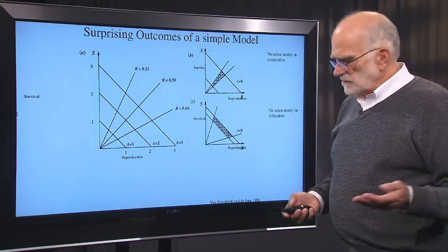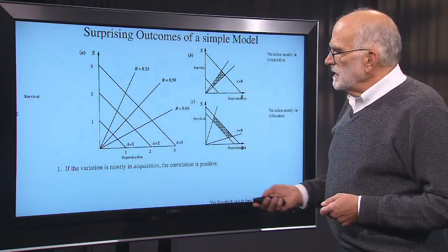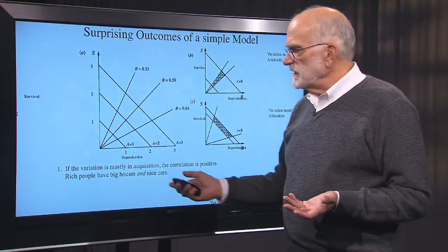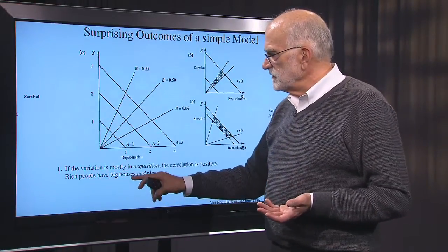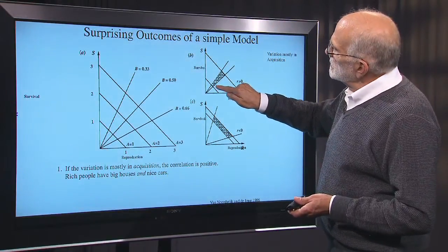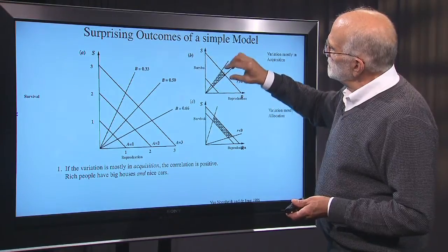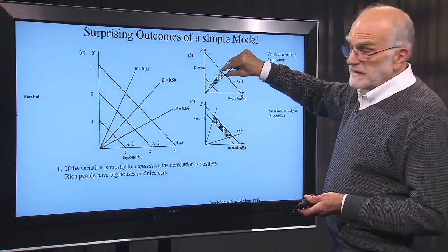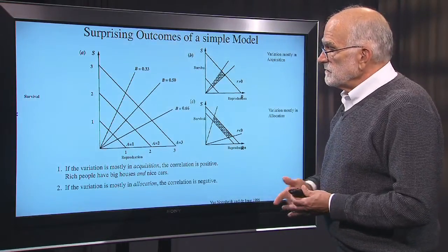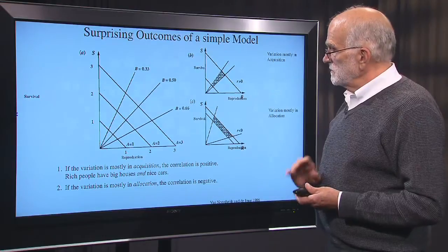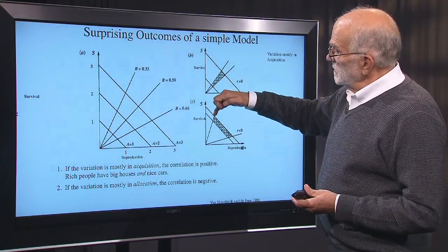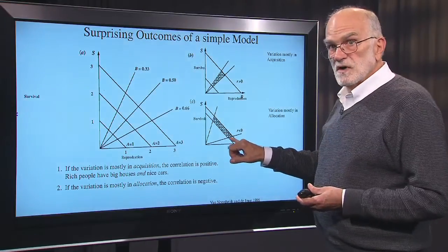That might look a little puzzling, but think about it this way. If the variation is mostly in acquisition and the correlation is positive, we have the situation where rich people have both big houses and nice cars — the poor people have neither, and the rich people have both. However, if variation is mostly in allocation, there's a negative relationship: you can either have a nice house or a nice car, but you can't have both.